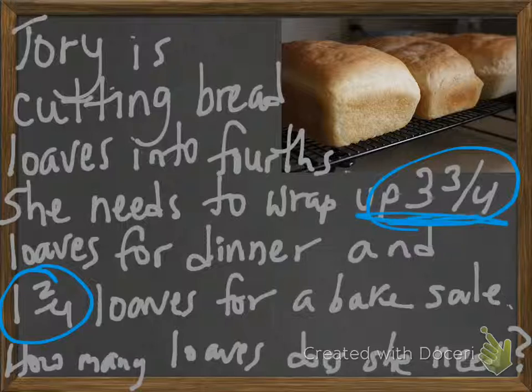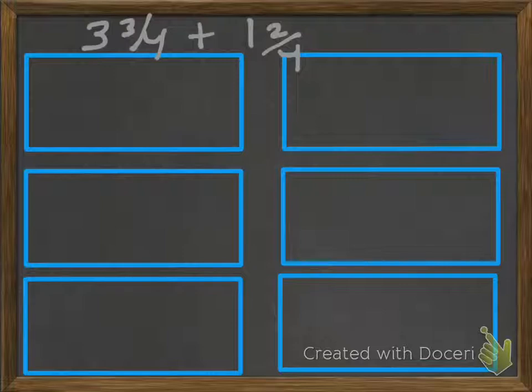So 3 and 3/4 loaves for dinner, 1 and 2/4 loaves for bake sale. So what we have here is 3 and 3/4 plus 1 and 2/4.